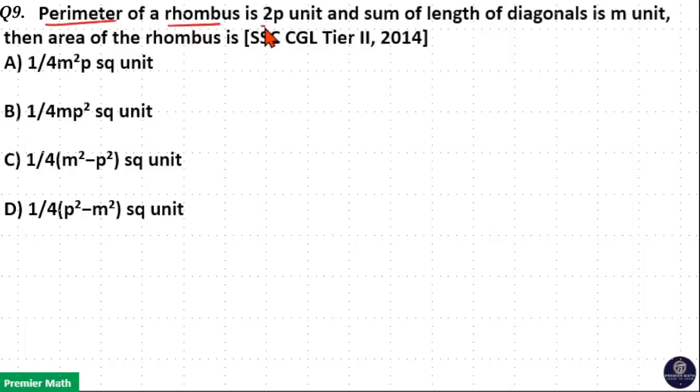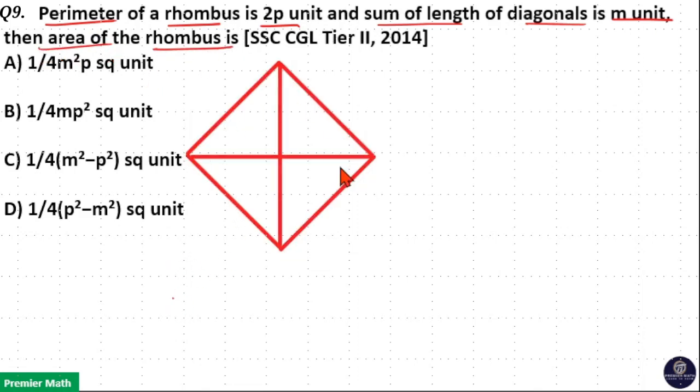Perimeter of a rhombus is 2p unit and sum of length of diagonals is m unit. Then the area of the rhombus is. Here rhombus means all four sides are equal.